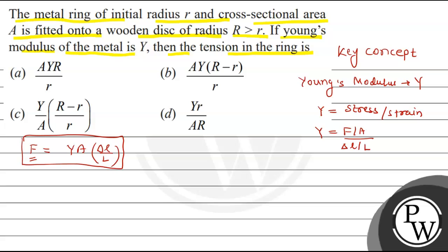So here we will see the solution. The solution which we have to consider given values: radius of ring in initial condition is equal to r and cross sectional area capital A.